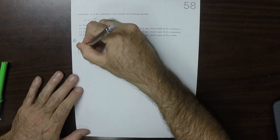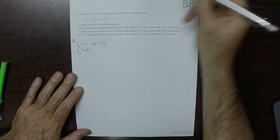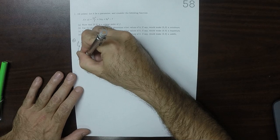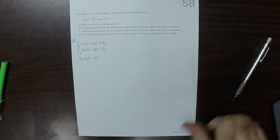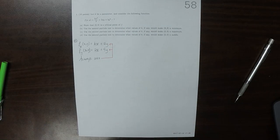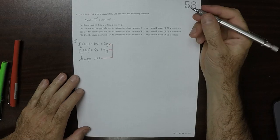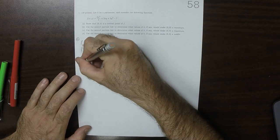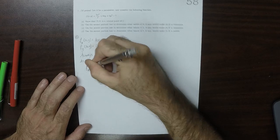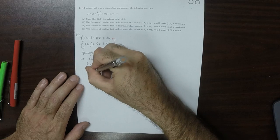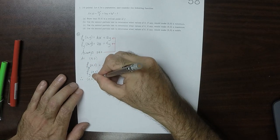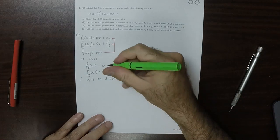The y partial is 2x plus 4y. These partials are always defined. Therefore, the only kind of critical point that we'll find is when both partials are 0. So notice, at the origin, the x partial at the origin is 0, and the y partial at the origin is 0. And therefore, the origin is a critical point.